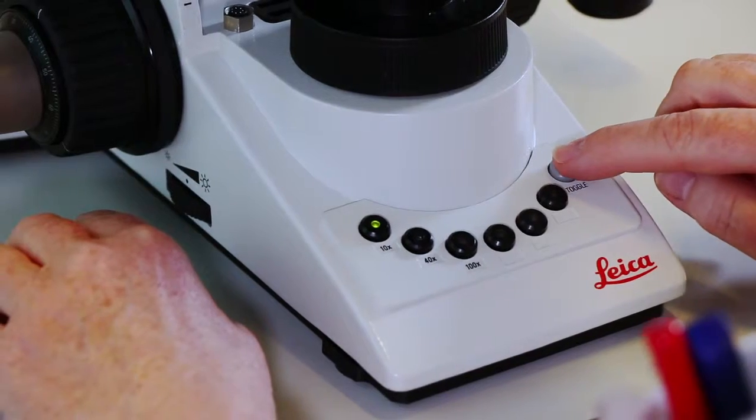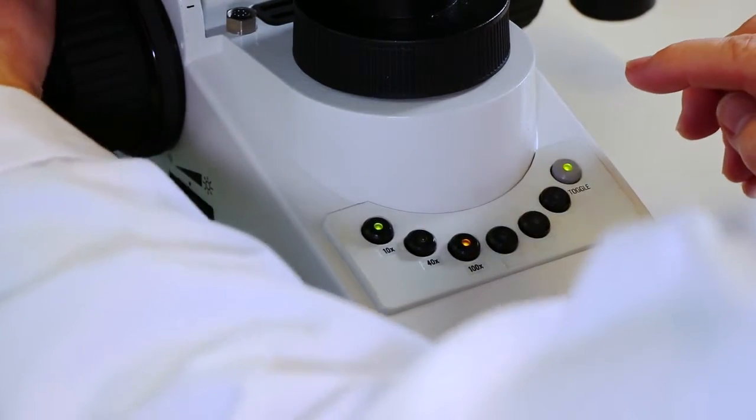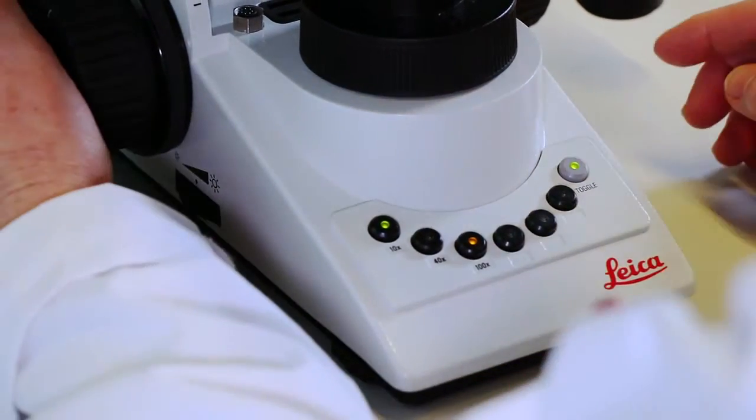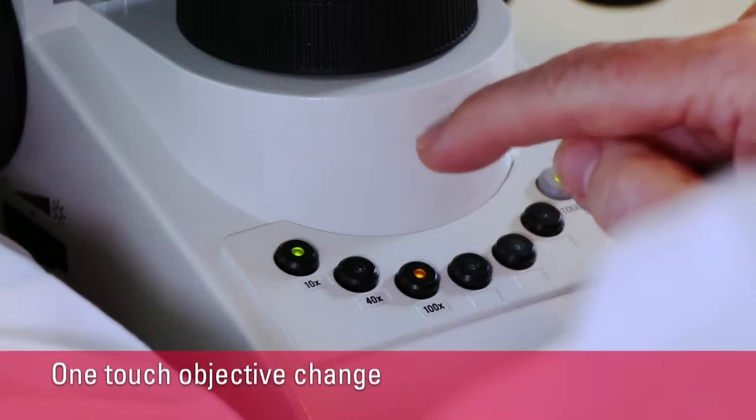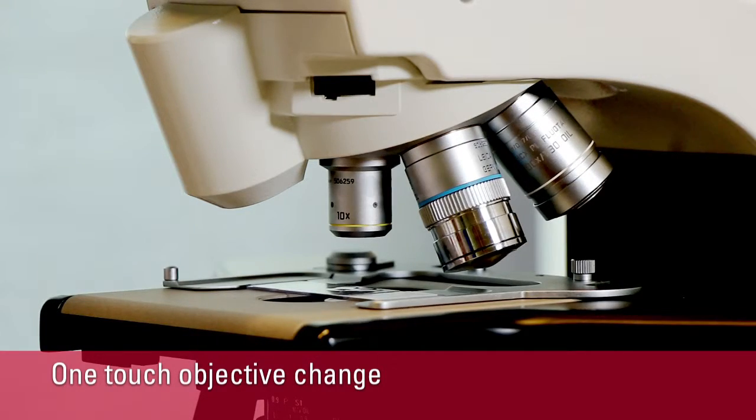I can also use the toggle mode. Then I press the grey button and choose the two objectives I want to use, for instance the 10 and 100 times. So I can change objectives very quickly.